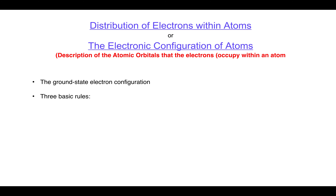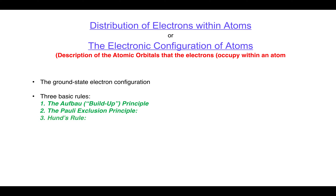There are some basic rules that govern the filling of the atomic orbitals, and these are three rules: namely the Aufbau principle — Aufbau is a German word that means 'build up' — the second is Pauli's exclusion principle, and the third is Hund's rule. We will discuss these three rules one by one.